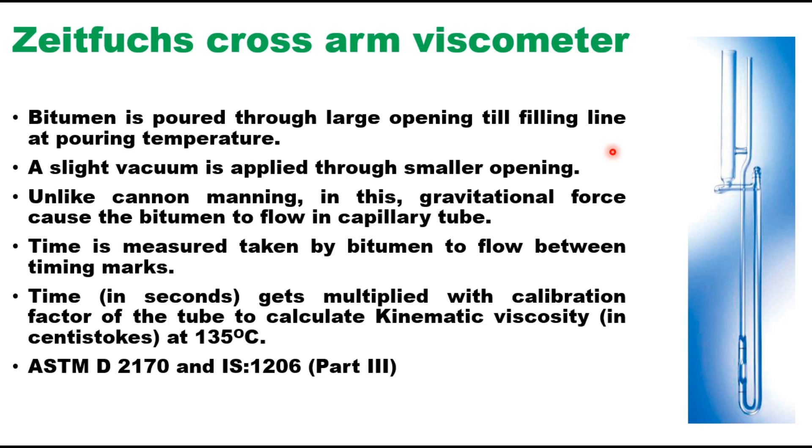Kinematic viscosity can also be measured using Zite-Fuchs cross arm viscometer. Now, because at the temperature of 135 degree centigrade the asphalt content is sufficiently fluid to flow through the capillary tube under gravitational force alone and therefore there is no need to apply any partial vacuum as in the case of Cannon Manning viscometer.